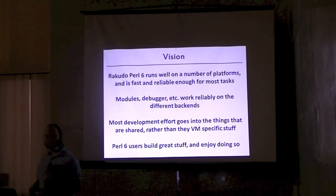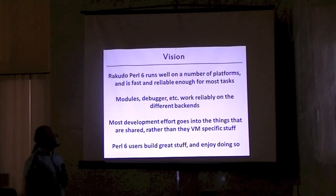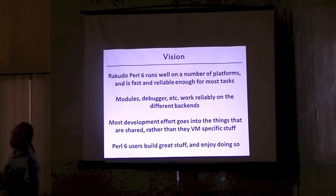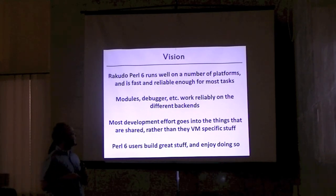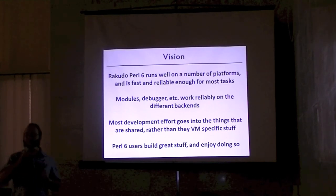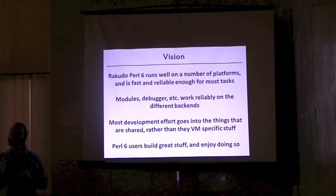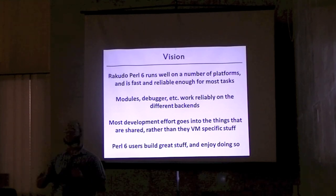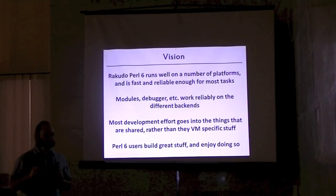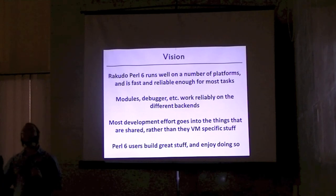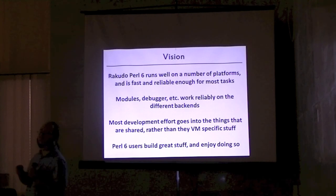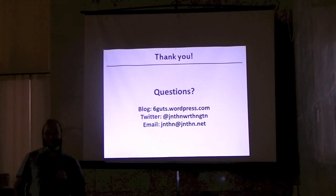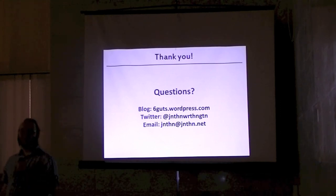Very last slide: the vision. Where I'd like us to get to in maybe the next year or so — I'd like Perl 6 to run nicely and reasonably quickly on a bunch of platforms, so most tasks don't hit the speed problem. You can use the modules and the nice debugger. And most of the development work is not going into chasing running on all of these different backends, but actually on building the shared stuff that helps no matter what you run Rakudo on. One really nice thing: Liz has been doing awesome stuff on Rakudo but hasn't actually been building Rakudo on JVM — just testing on Parrot — and hasn't actually broken Rakudo on JVM once. I think that says a lot about the abstraction layer. And out of time — so ask me questions during the coffee break. Thanks very much.